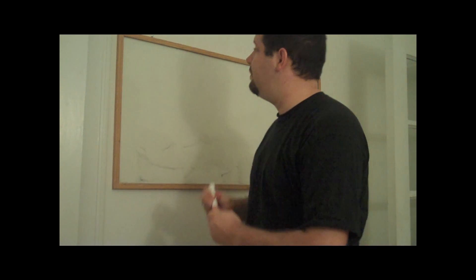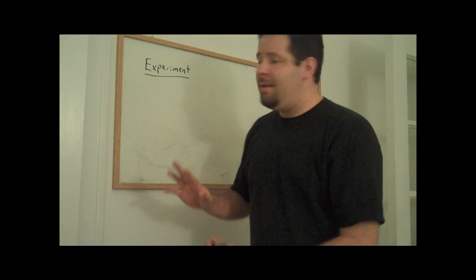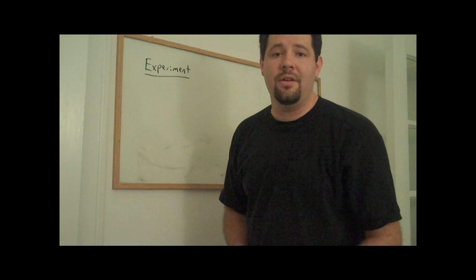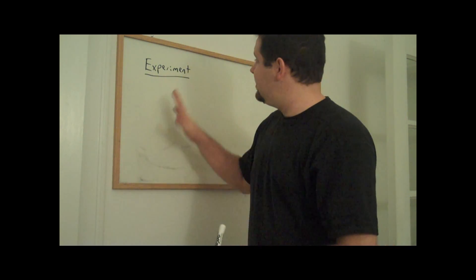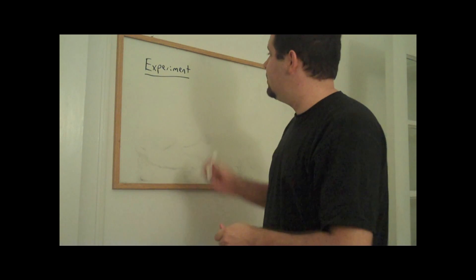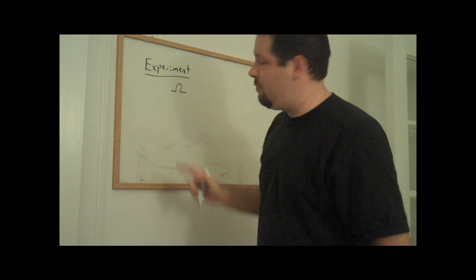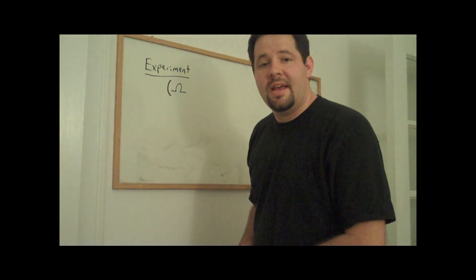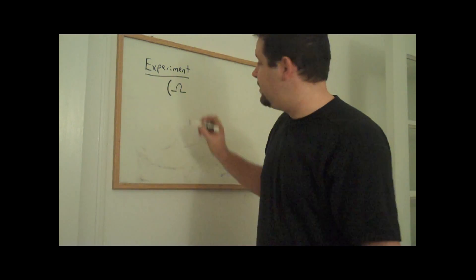Probability really starts with the notion of an experiment. What I mean is any process that produces an outcome that is not known in advance. This experiment has a set of possible outcomes. We'll denote that set with the capital letter Omega. So this set of possible outcomes is what we'll call the sample space.